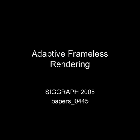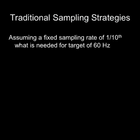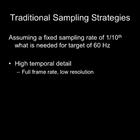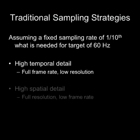We propose an adaptive frameless rendering technique capable of interactive rendering at sampling rates drastically lower than required by conventional approaches. Given a fixed number of samples per second, traditional double-buffered rendering can provide high temporal detail by rendering at a high frame rate but low resolution. However, this can result in heavy spatial under-sampling artifacts. Instead, one can choose high spatial detail by rendering at a high resolution but at a low frame rate. However, the resulting delay may be unacceptable in an interactive setting.